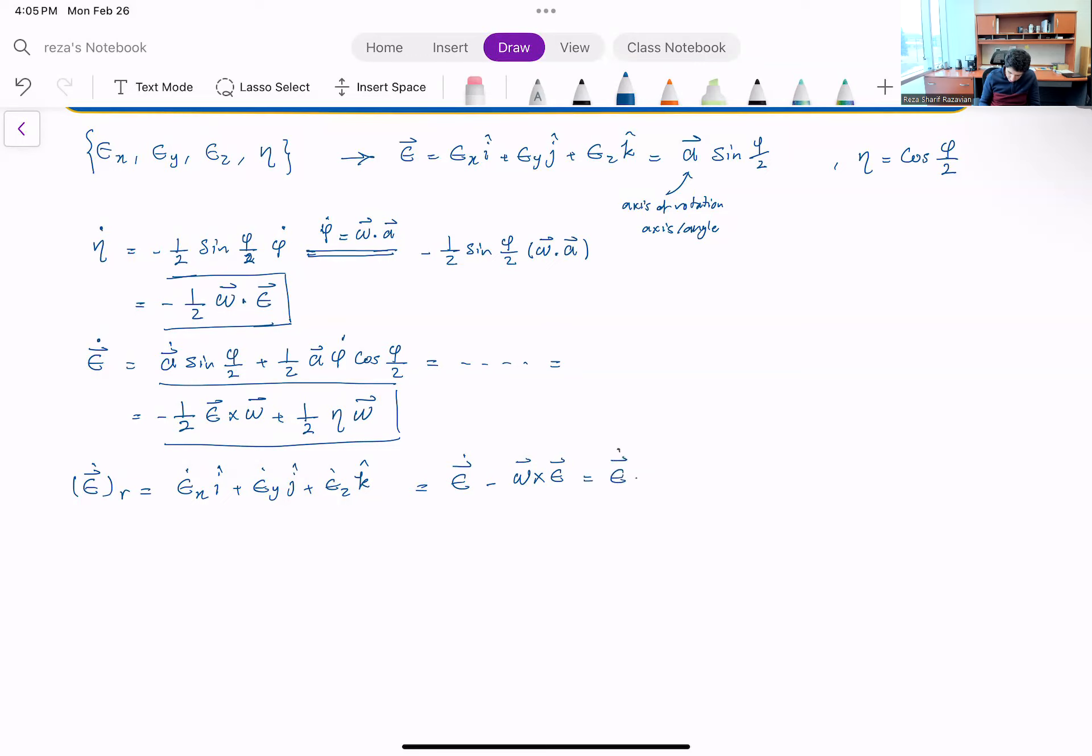And I can again do the same thing. This E dot plus epsilon cross omega. And if I do that at the top equation, just add E cross omega to that, if you do this the minus half becomes plus half. So this one is one half epsilon cross omega plus one half eta times omega.